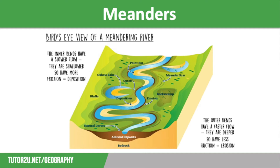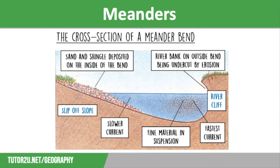The faster flow on the outside bend causes vertical erosion, making the riverbed deeper on this side, and the slow flow leading to deposition leads to a gentle slope on the point bar. This is called the slip-off slope. You can see this in the cross-section diagram on the screen now.